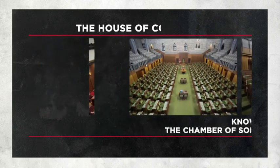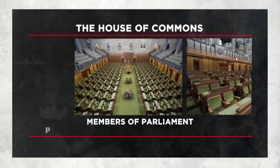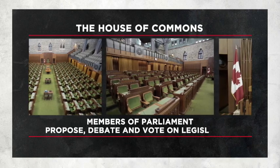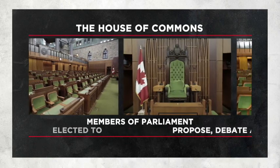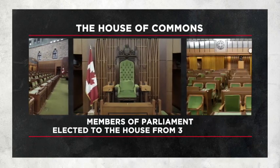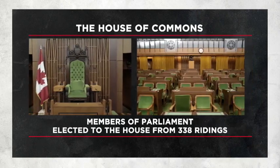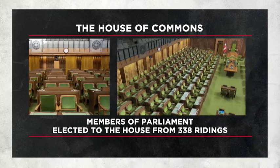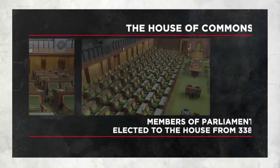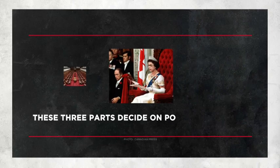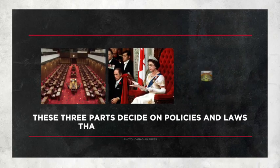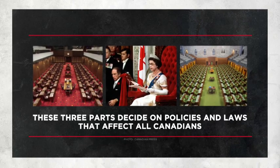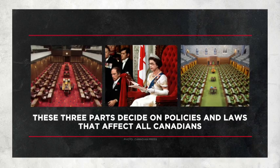The House of Commons. Members of Parliament propose, debate, and vote on legislation. They are elected to the House from 338 different areas of the country, which are also called ridings. Together, these three parts decide on policies and laws that affect all Canadians.